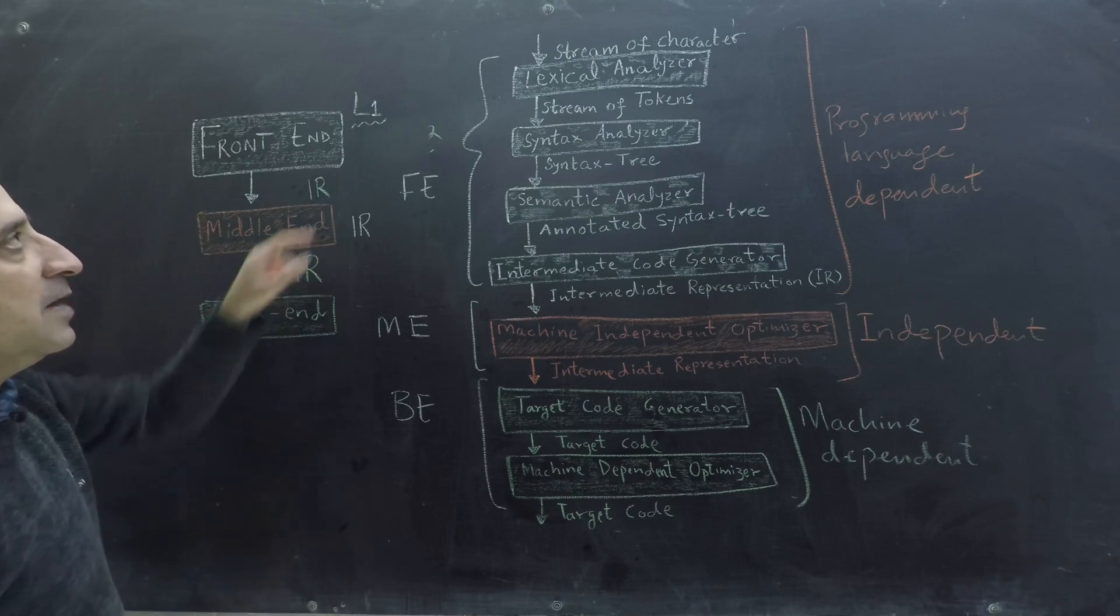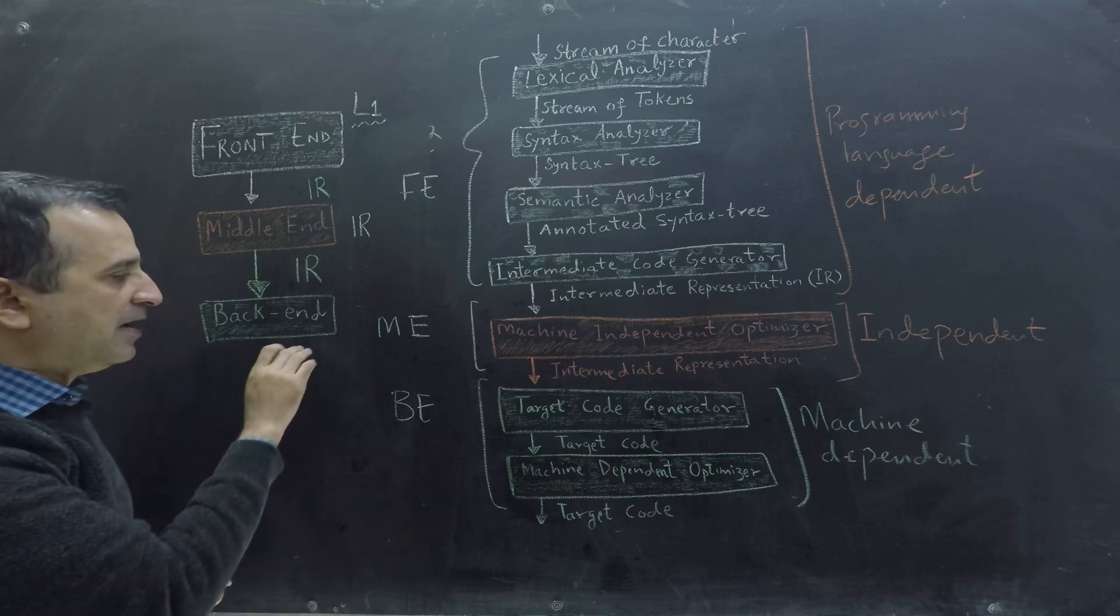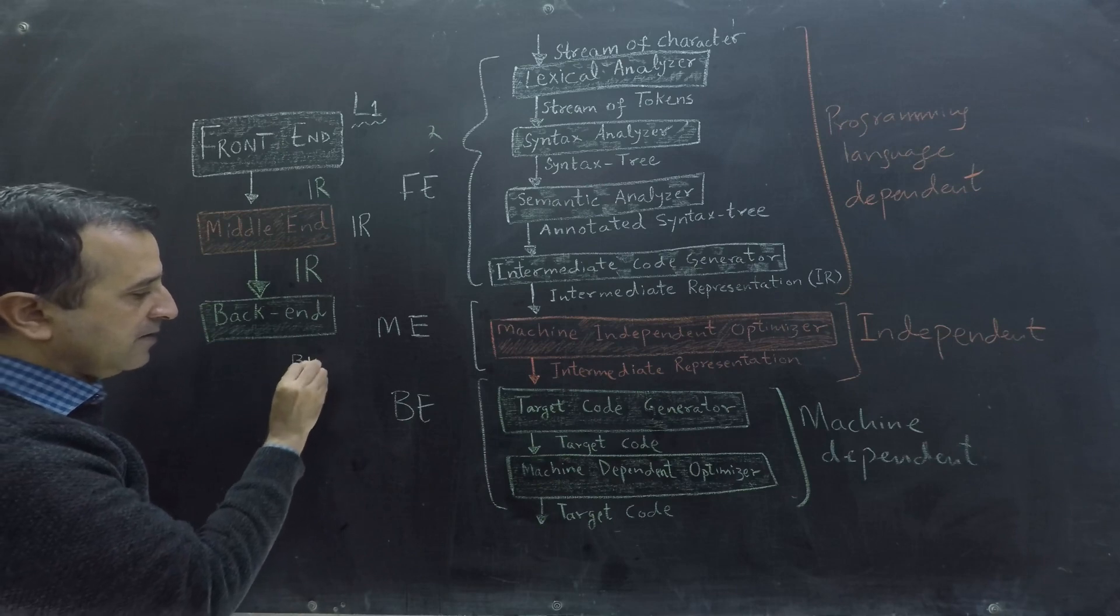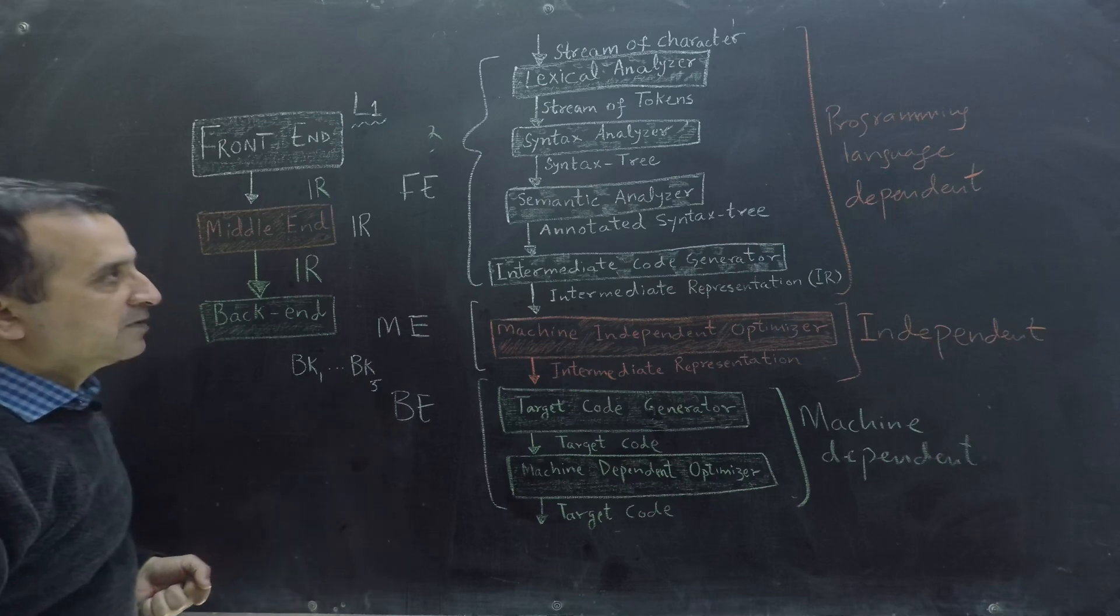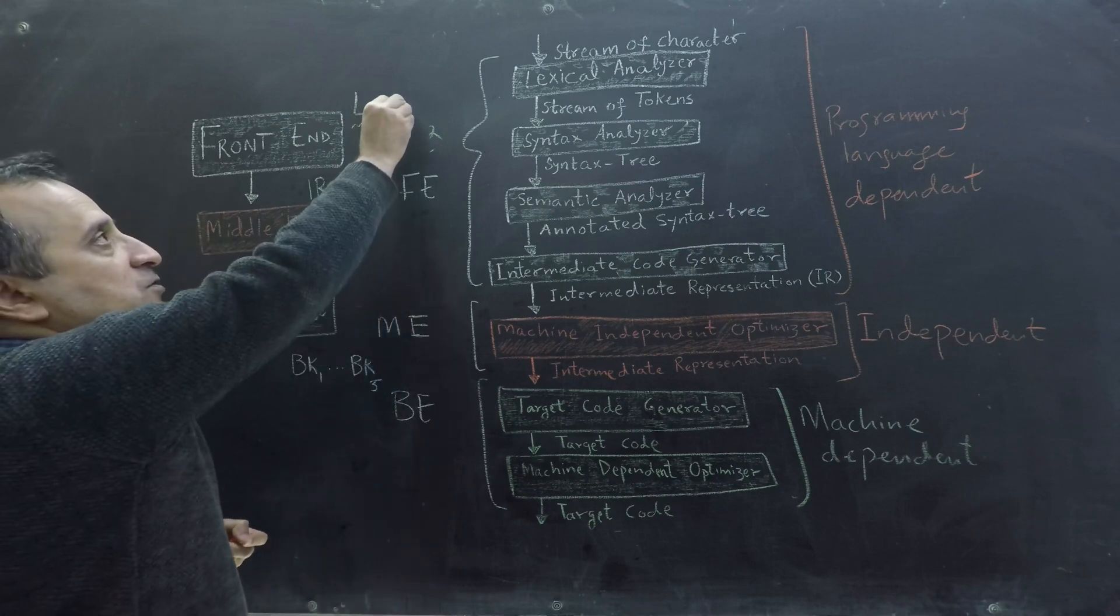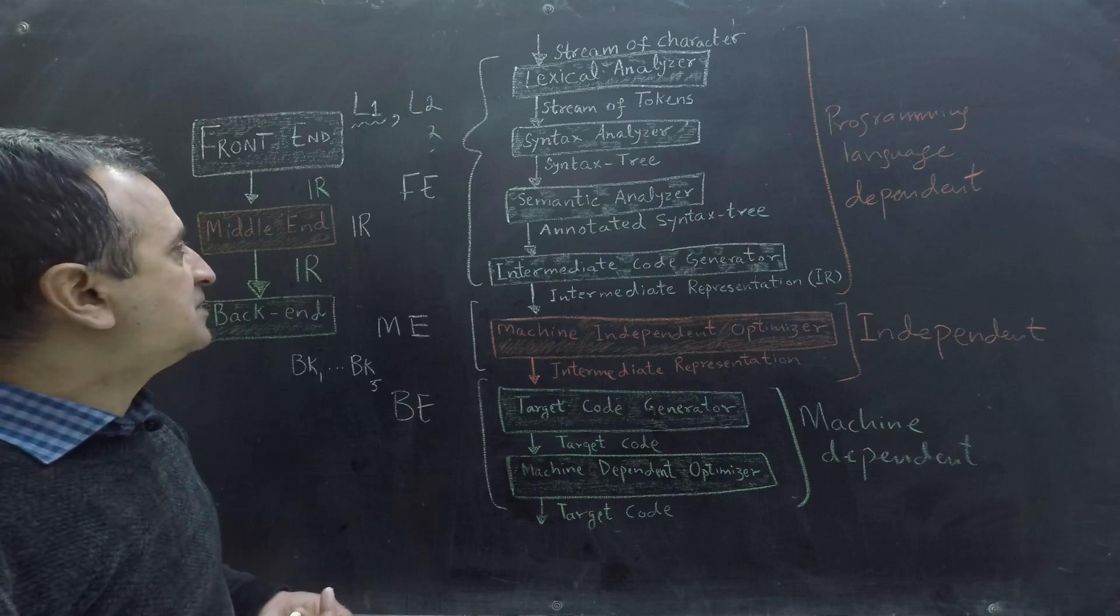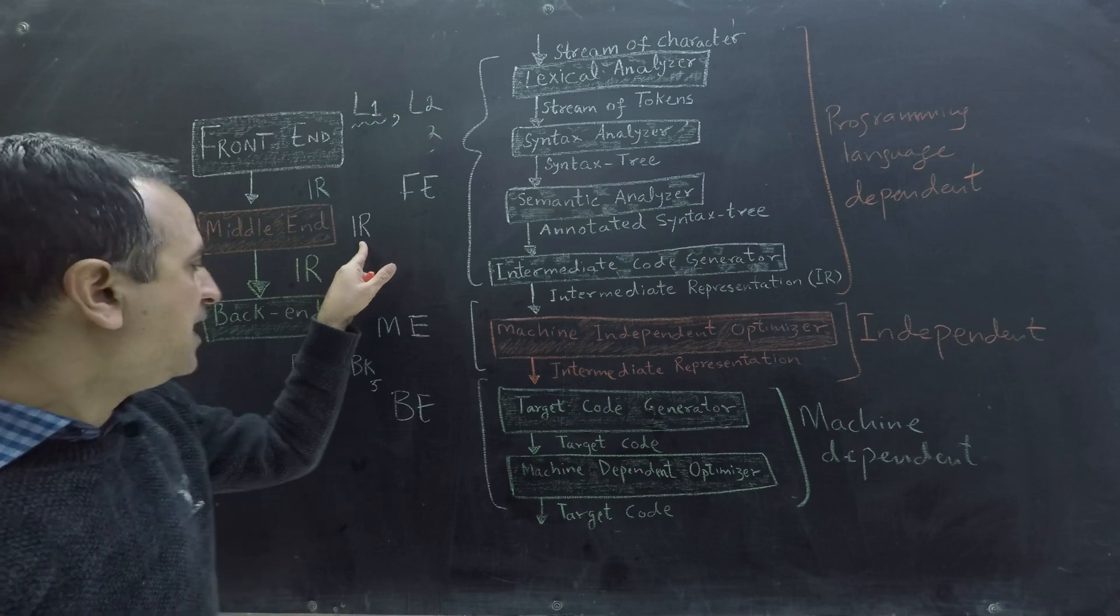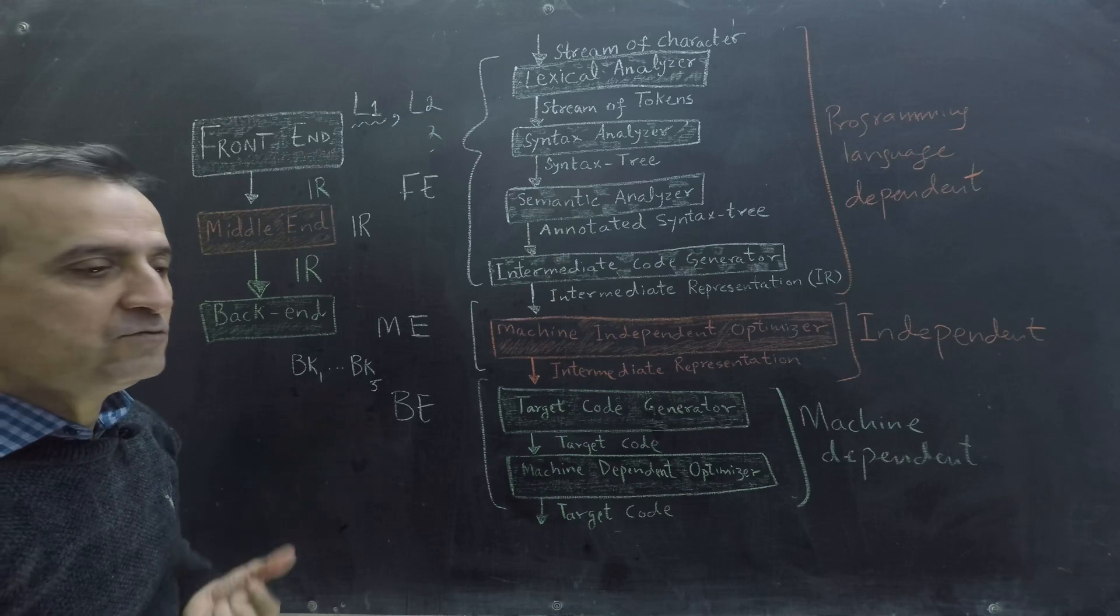And then I support my programming language L1 in five different machines. So I have to write five different backends. So I have back end 1 to back end 5. Now if I have to make a new programming language, say L2, and if I decided that I will generate the same IR, the same intermediate representation, then I don't have to rewrite those backends. I can use their code. I can use already existing back end.